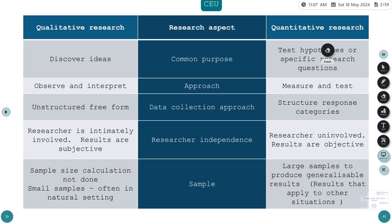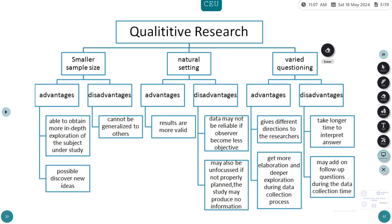I want to look at the advantages and disadvantages of each of these features on the qualitative side. What are the advantages and disadvantages of a smaller sample size? One thing is that you are able to obtain more in-depth exploration of people's ideas, perceptions, and beliefs in qualitative research, and you will also discover new ideas in the process. The disadvantage is that it cannot easily be generalized to a broader population or context.